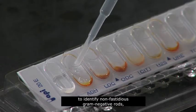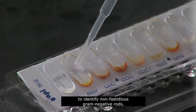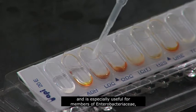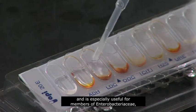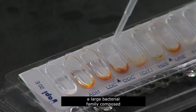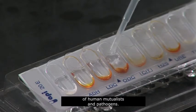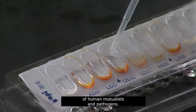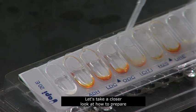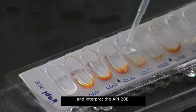This test is designed to identify non-fastidious gram-negative rods and is especially useful for members of Enterobacteriaceae, a large bacterial family composed of human mutualists and pathogens. Let's take a closer look at how to prepare and interpret the API-20E.